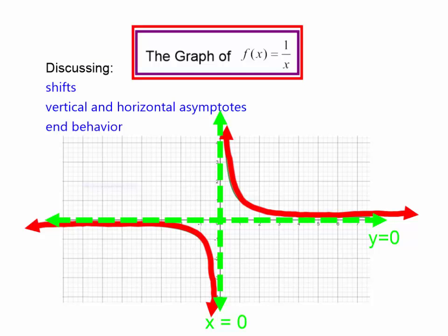So what we talked about in this video is basically the graph of 1 over x. We talked about the end behavior, how the graph could shift, and horizontal and vertical asymptotes.